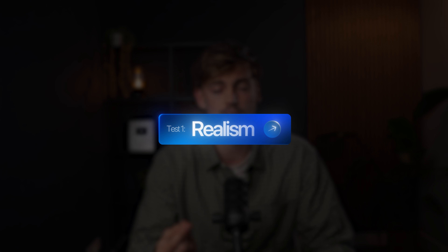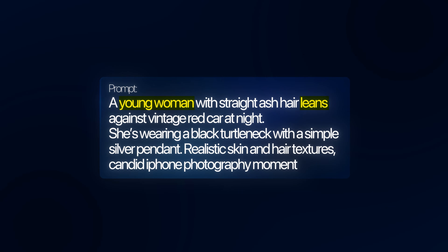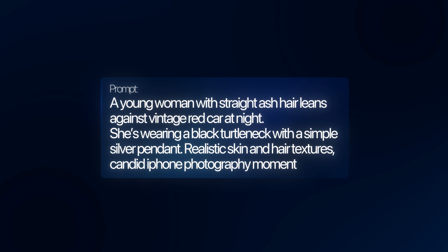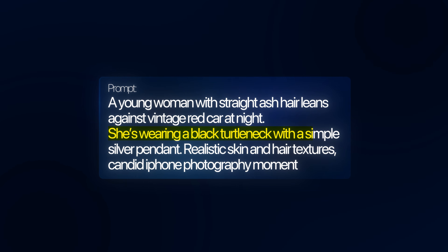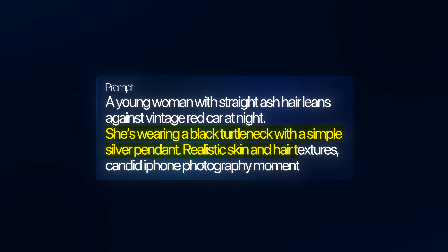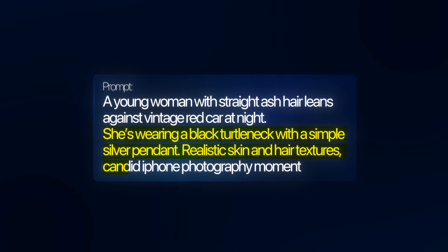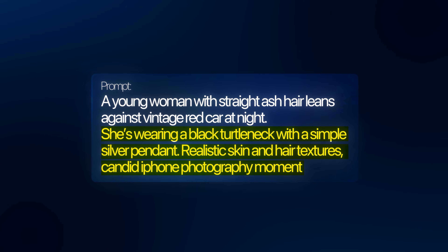For our first test, we're testing realism. Specifically, I want to see with text-to-image how well it generates a character leaning against an object — in this case, a young woman leaning against a vintage red car. Details in the prompt include a black turtleneck with a simple silver pendant, realistic skin and hair textures, and a candid iPhone photography moment. We're starting off with Nano Banana Pro, and this looks quite insane — already quite hard to beat.